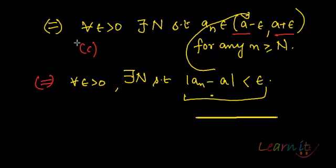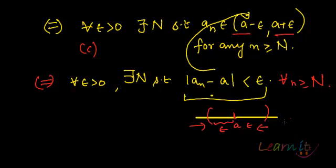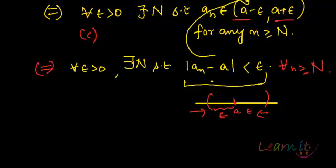Let me just depict it. The distance between a_n and a — a_n can come from either side. The distance between a_n and a is ε: it can be plus ε or minus ε, for all n ≥ N. So indeed, each of these statements depicts the same story: the sequence a_n tends to a.